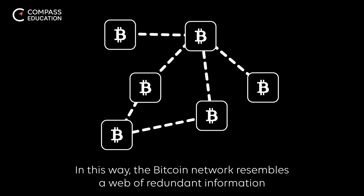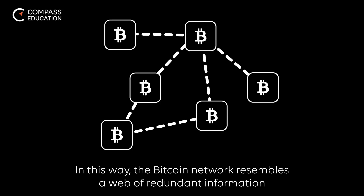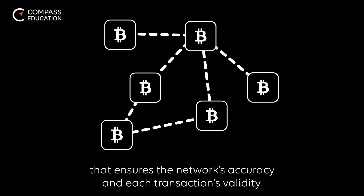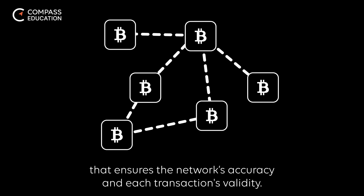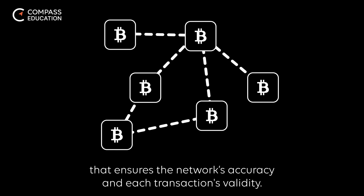In this way, the Bitcoin network resembles a web of redundant information that ensures the network's accuracy and each transaction's validity.